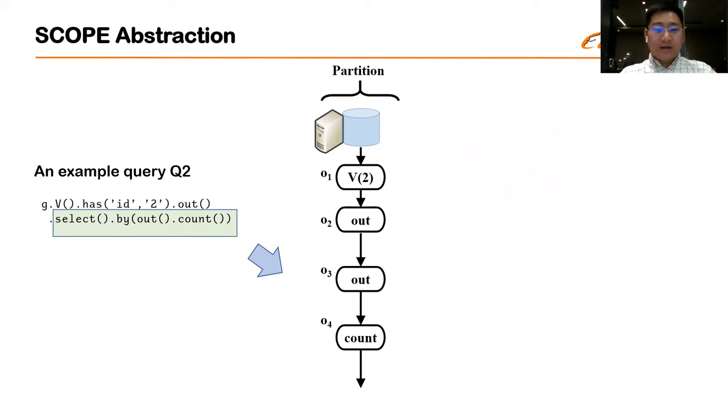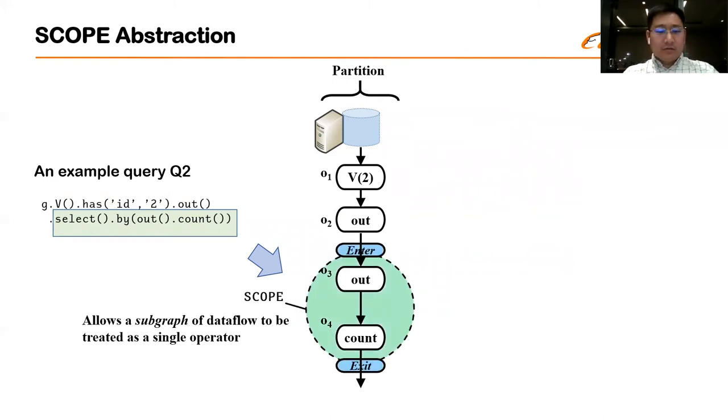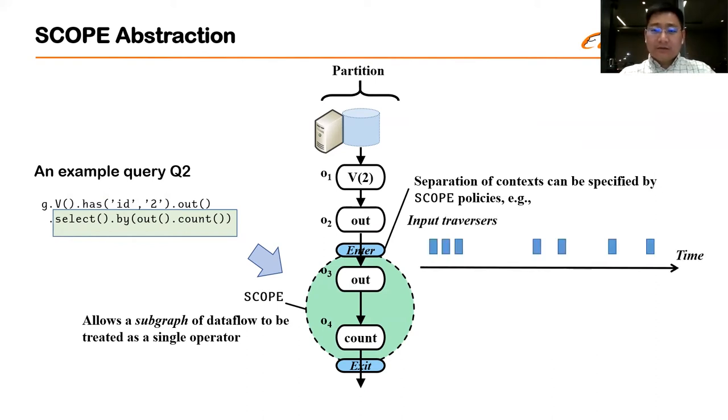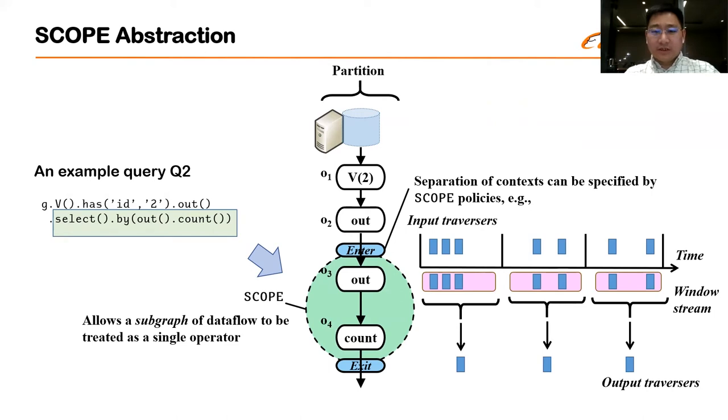To address this, Gaia introduced a powerful abstraction called scope, which allows us to model a subgraph of dataflow as a single operator. In addition, for the subgraph operator, additional policies can be specified, which indicates how the input traversals should be grouped together into separate execution contexts, we call them windows, so that the set of traversals will be conceptually handled in isolation, be executed in isolation to produce output correspondingly.